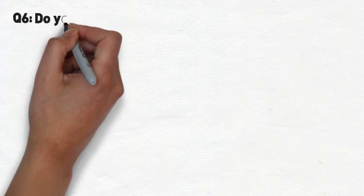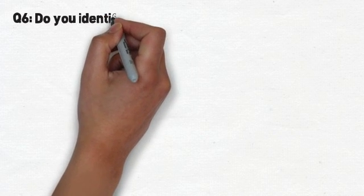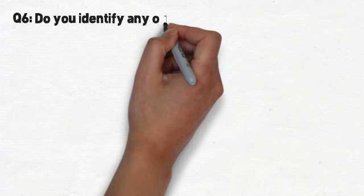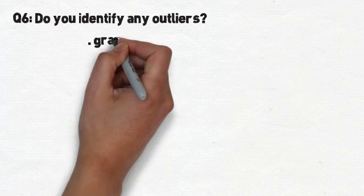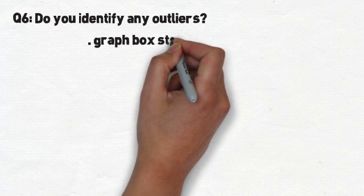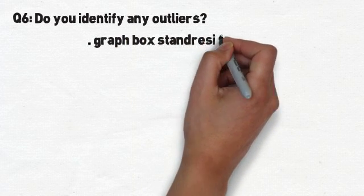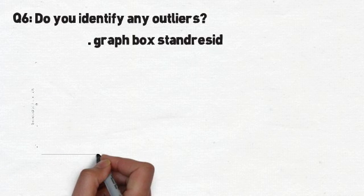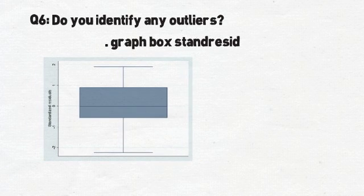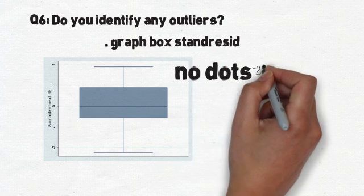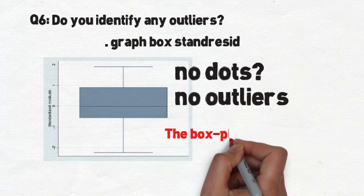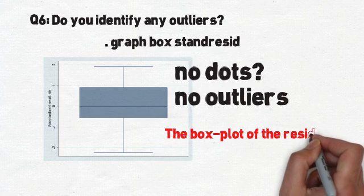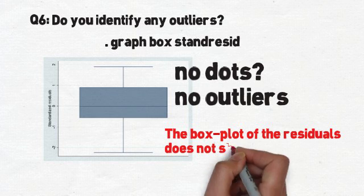Question 6 asks whether we can identify any outliers. To do that we need to visualize the data, so let's make a box plot. We use the Stata command 'graph box stdresid'. It doesn't look like there are any outliers — if there were any, they would show up outside the boundaries as dots. No dots, no outliers. Our answer is that the box plot of the residuals does not show any outliers.